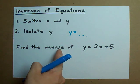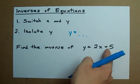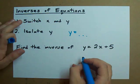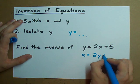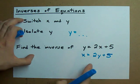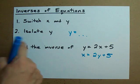For example, if you're asked to find the inverse of y equals 2x plus 5, switch x and y. So you have x equals 2y plus 5. See how we switch them? And then isolate y.